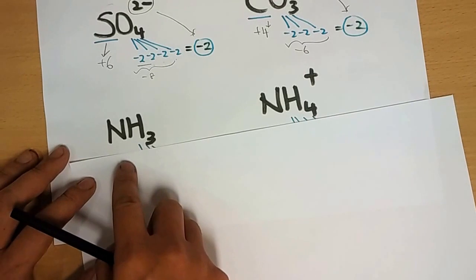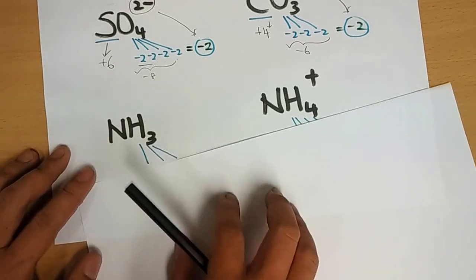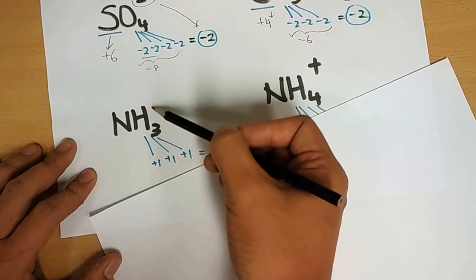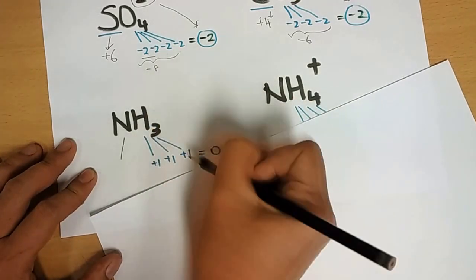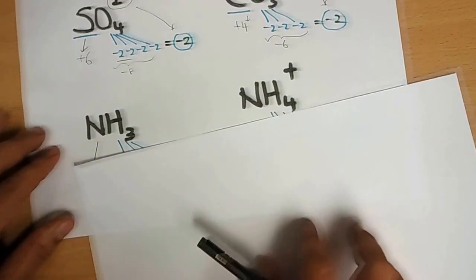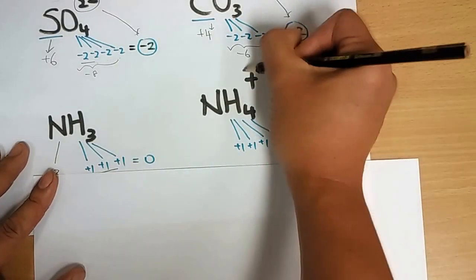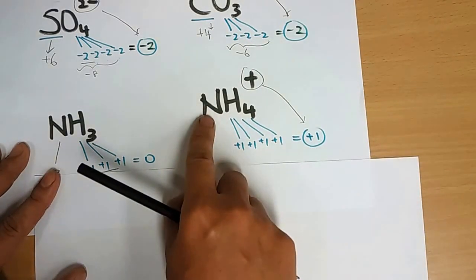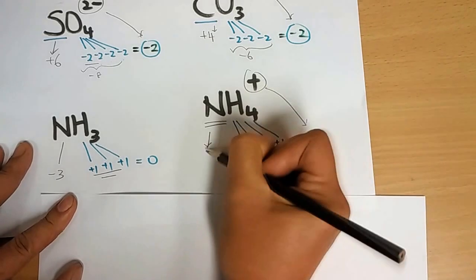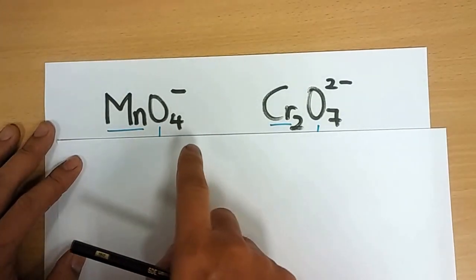Now let's look at ammonia NH₃. In ammonia, hydrogen is placed at the back, so hydrogen from the periodic table is plus one, and three hydrogens sum to plus three. Ammonia is a neutral molecule with no charge, so nitrogen must be minus three to give you zero overall. For ammonium NH₄⁺, it's the same but now you have an overall charge of plus one and four hydrogens, so nitrogen must still be minus three.